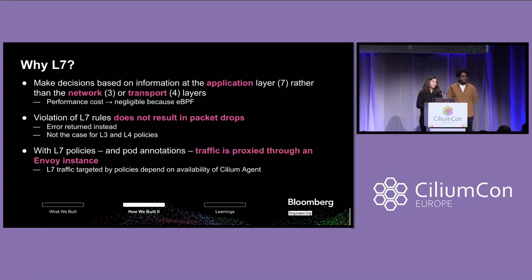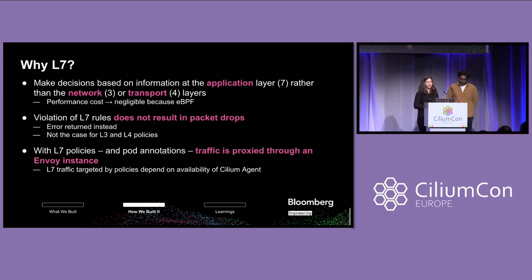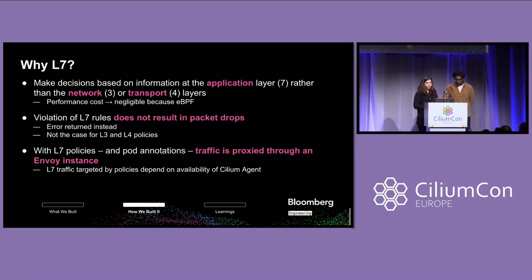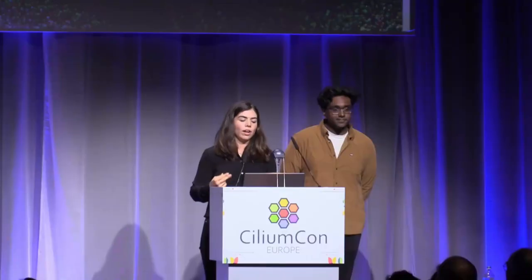We chose L7 for a few reasons. One, it allows us to make decisions based on information at the application layer rather than at the network or the transport layer. The performance cost of doing this ends up being negligible because of eBPF and its magic. The violation of L7 rules doesn't result in a packet drop, which means we're able to detect when there's an error and that traffic is not able to leave the node — that's not the case for L3 and L4 policies. And with L7 policies and pod annotations, that traffic is proxied through an Envoy instance, which means L7 traffic targeted by the policies depends on the availability of the Cilium agent itself.